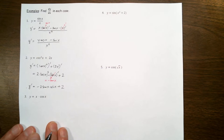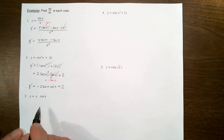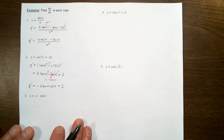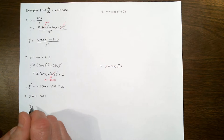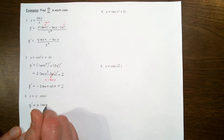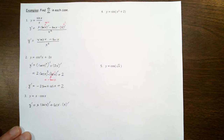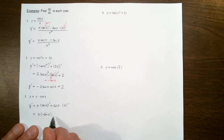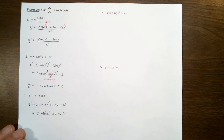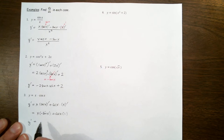Our third derivative problem involves differentiating x times cosine of x, a product. So we apply the product rule. Y prime will be the first function x multiplied by the derivative of the second function, plus the second function cosine of x multiplied by the derivative of the first. The derivative of cosine of x is negative sine of x, and the derivative of x to the first is 1. So the derivative of y is minus x sine of x plus cosine of x.